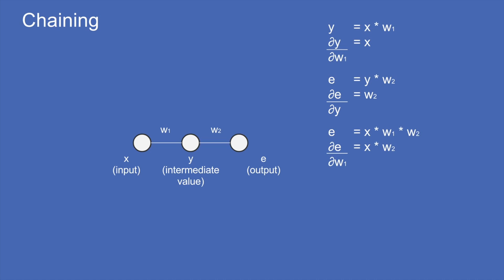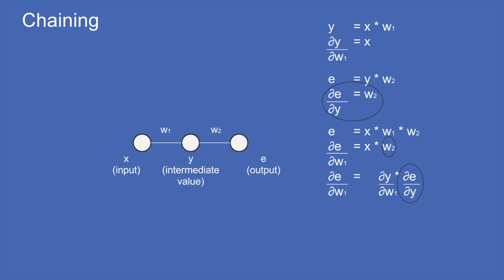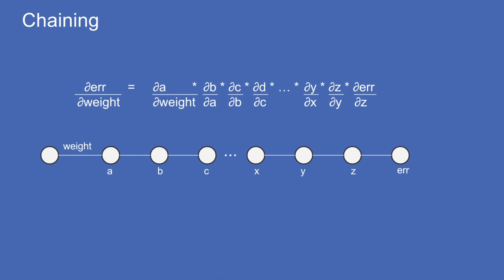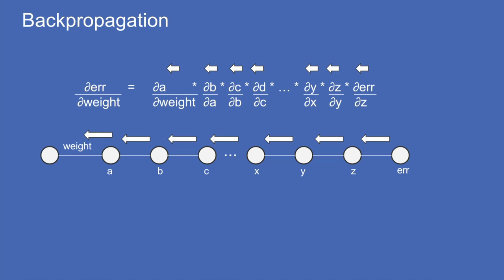This illustrates that what we just calculated is actually the product of dy/dw1 times dE/dy multiplied together. This is chaining: you calculate the slope of each tiny step and then multiply all of those together to get the derivative of the full chain. In a deeper neural network, if I want to know how much the error will change when I adjust a weight deep in the network, I calculate the derivative of each tiny step all the way back to that weight and multiply them all together.